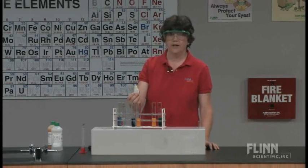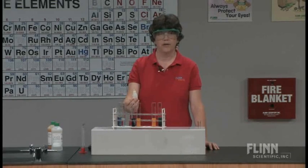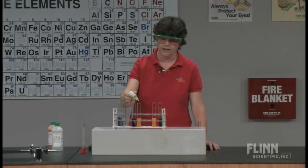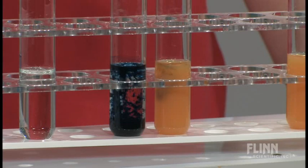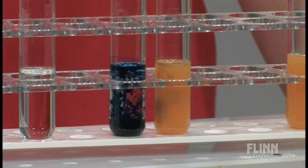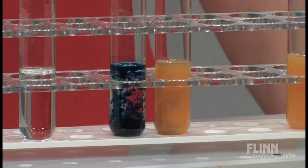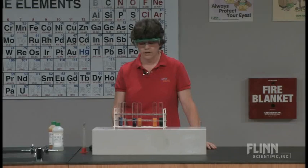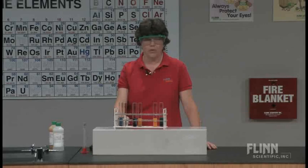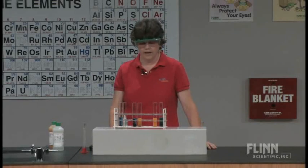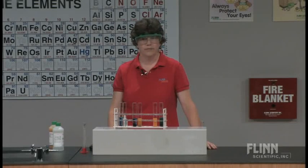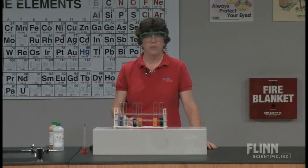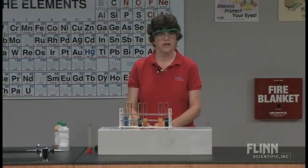But what happens if I add the ferricyanide, which is the three plus oxidation state, to the test tube that already has iron three plus in it? No color change. Maybe a little bit of blue. There might be a little bit of the two plus in there. But essentially we get no color change because we don't have that hexacyanide complex ion in the solution. So the Prussian blue is going to be when both iron oxidation states are present.